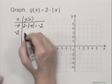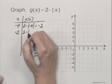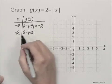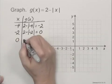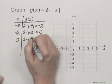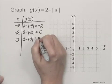When x is -2, we have 2 - |-2|. 2 - 2 is 0. When x is 0, we have 2 - |0|. 2 - 0 is 2.